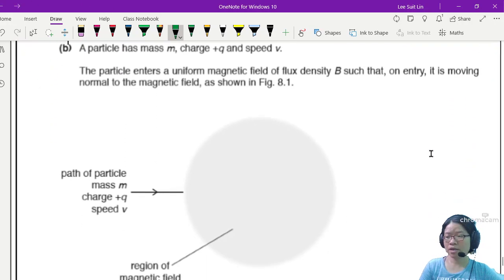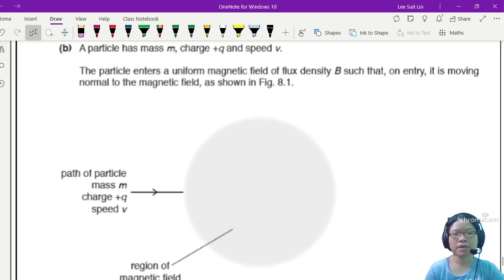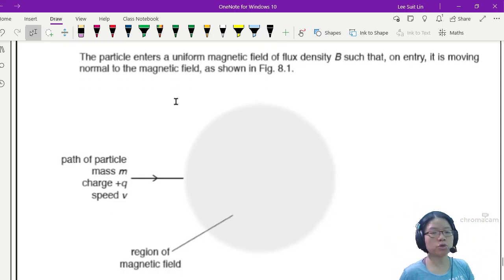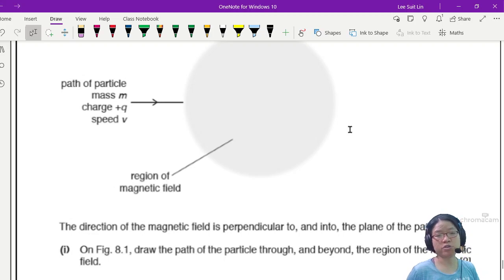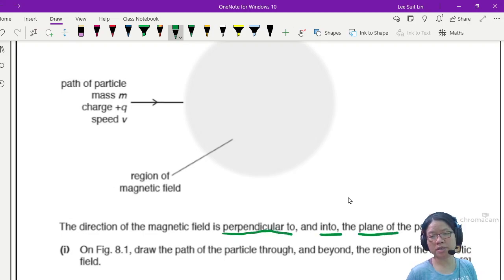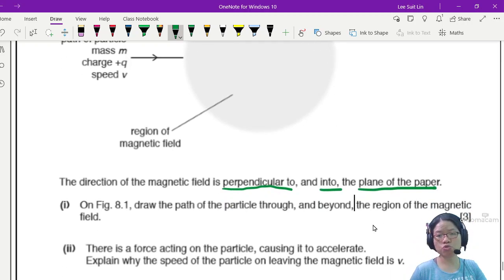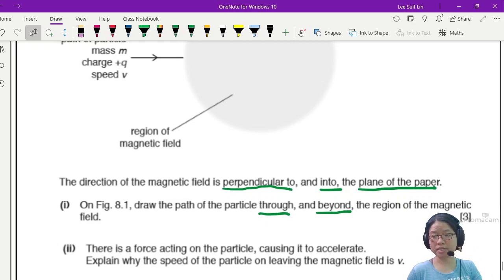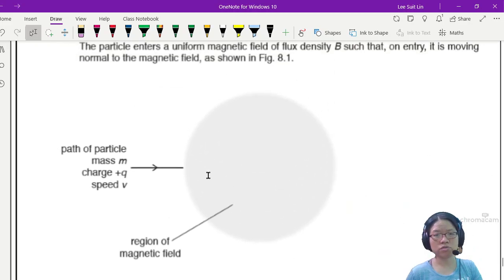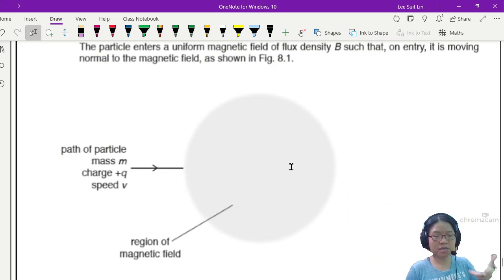Part B. A particle has mass m, charge positive q, and speed v. The particle enters a uniform magnetic field of flux density B such that on entry, it is moving normal to the magnetic field. The magnetic field is pointing perpendicularly into the plane of the paper. Draw the path of the particle through and beyond the region of the magnetic field. This is three marks. Time to use your left hand.